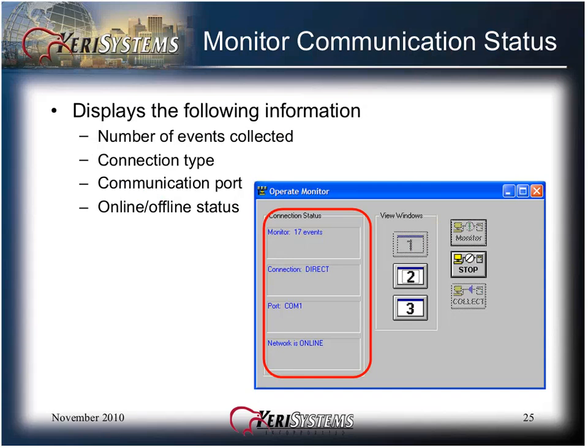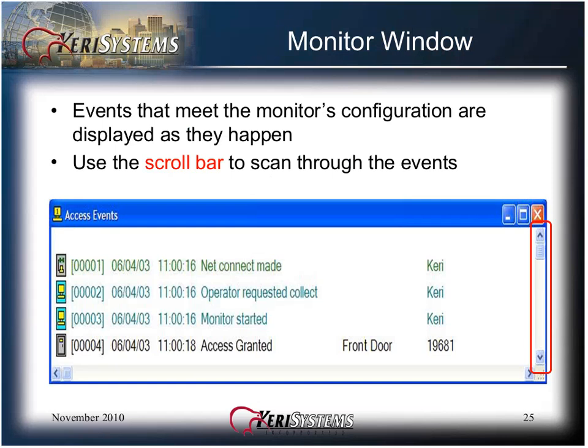The Monitor communication status displays the number of events collected, the connection type, the communication port, and the online-offline status of the network. Events that meet the monitor's configuration are displayed as they happen. Use the scroll bar to scan through the events. Events that appear in the monitor view window will also be sent to the archive files. If the monitor window is closed then reopened, the events window will be blank and begin collecting new events. The previous events are not lost — they have gone to the archive files for storage.